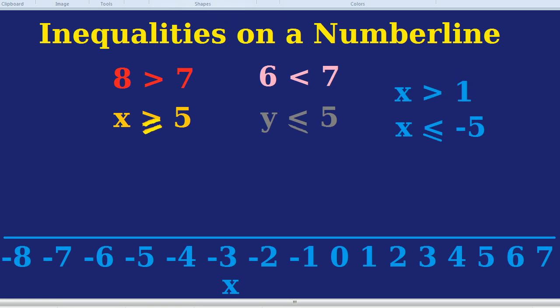Let's do x is greater than 1 first of all. It's going to be an empty circle because it's just greater than not greater than or equal to. That shows that 1 is not allowed. If x is greater than 1 that's like 2, 3, 4, 5, 6, 7, 8, 9, 10 forever. So we draw a line going in the direction of those numbers.